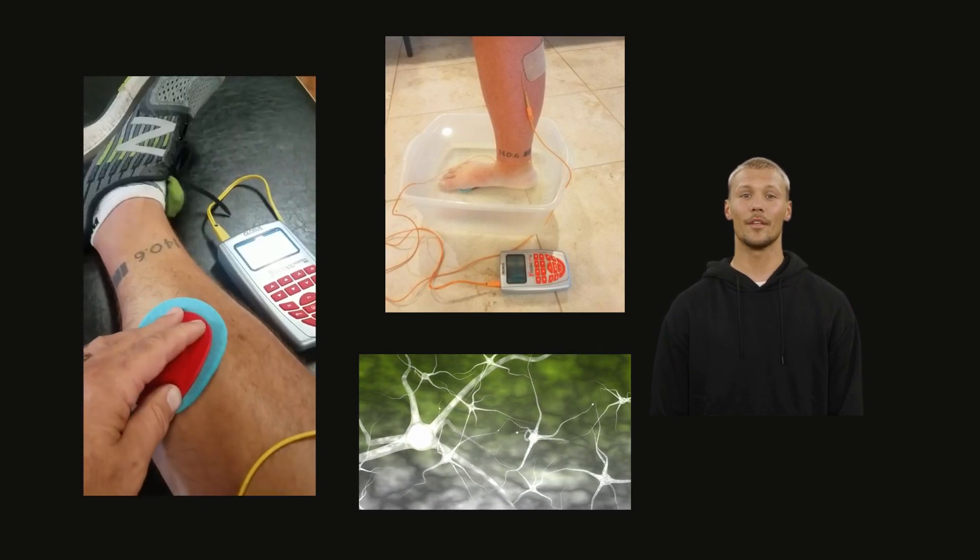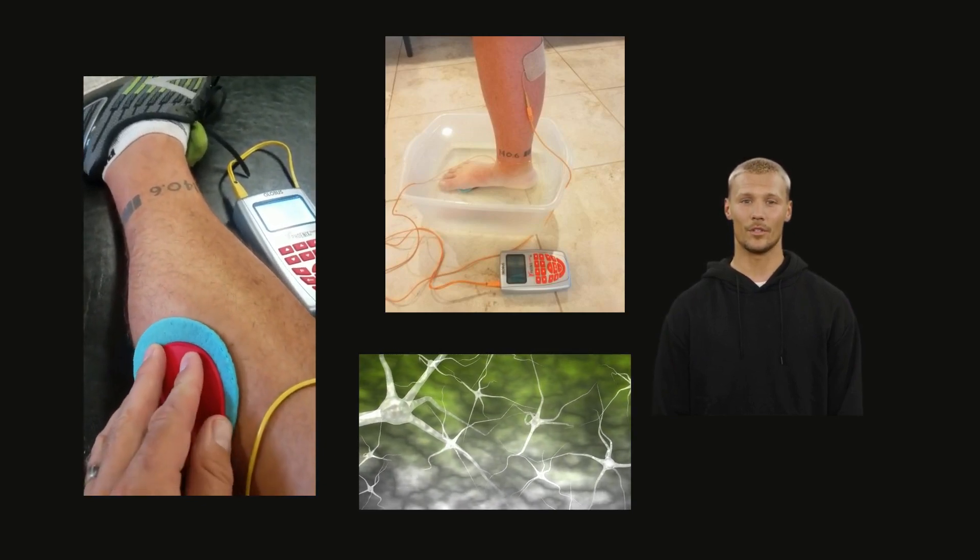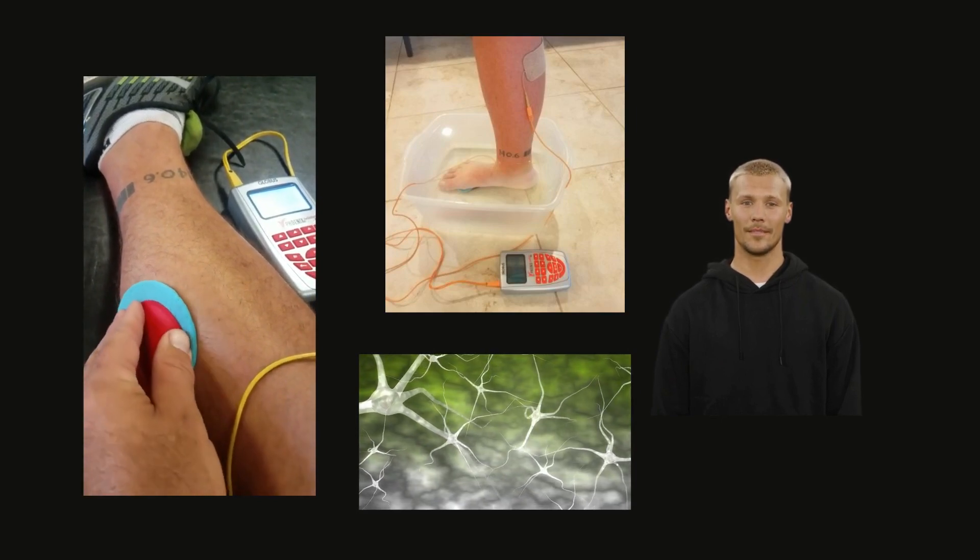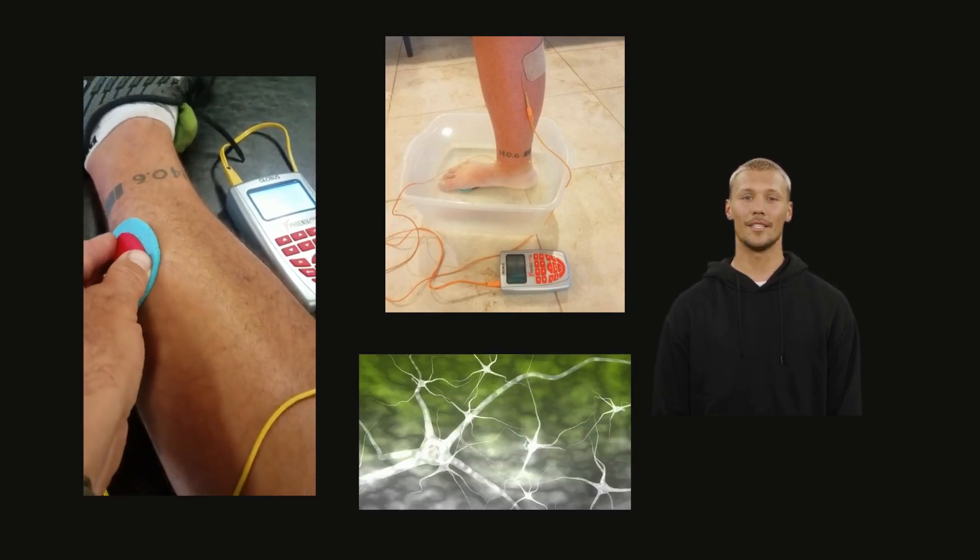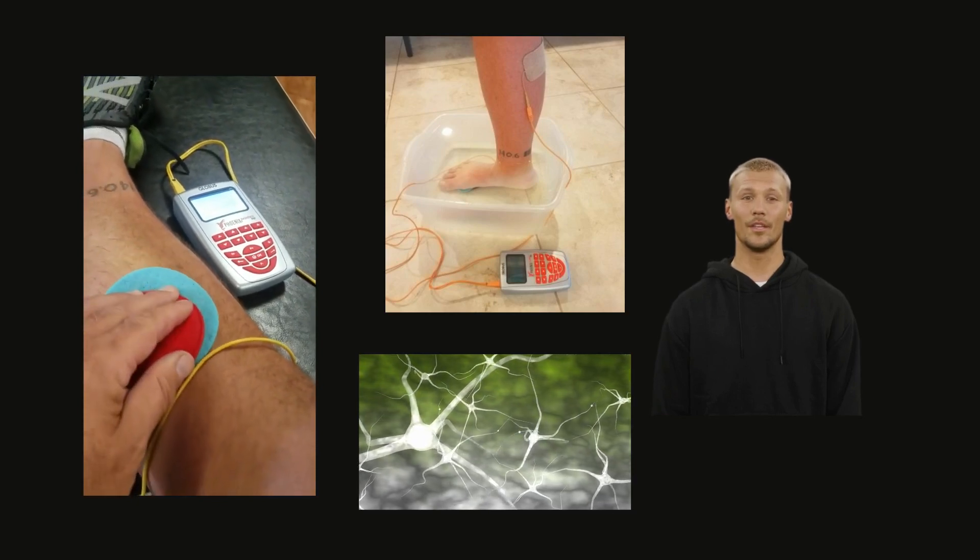In a nutshell, the current of injury is a concept that suggests your body generates an innate electrical current at the site of an injury, acting as a signaling mechanism to guide cells, promoting tissue repair, and sparking the remarkable process of regeneration.